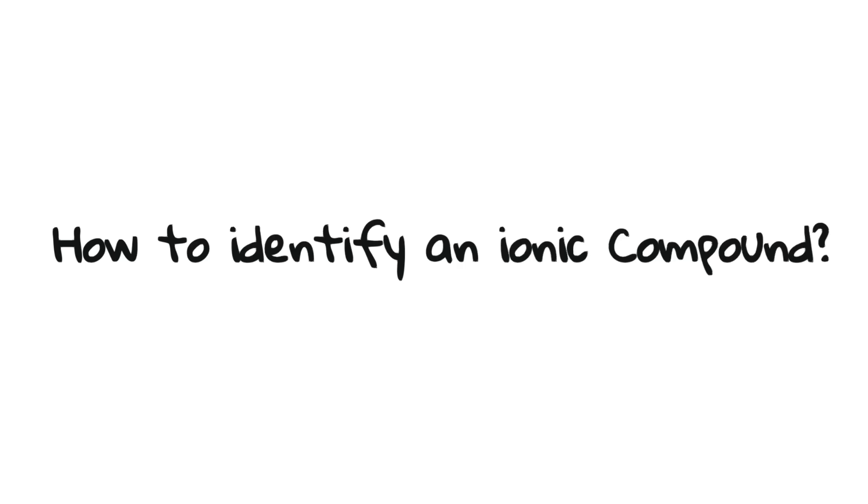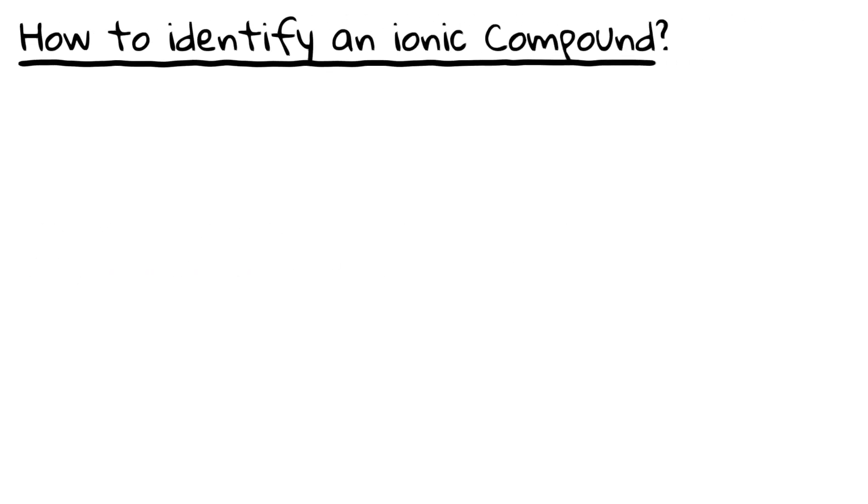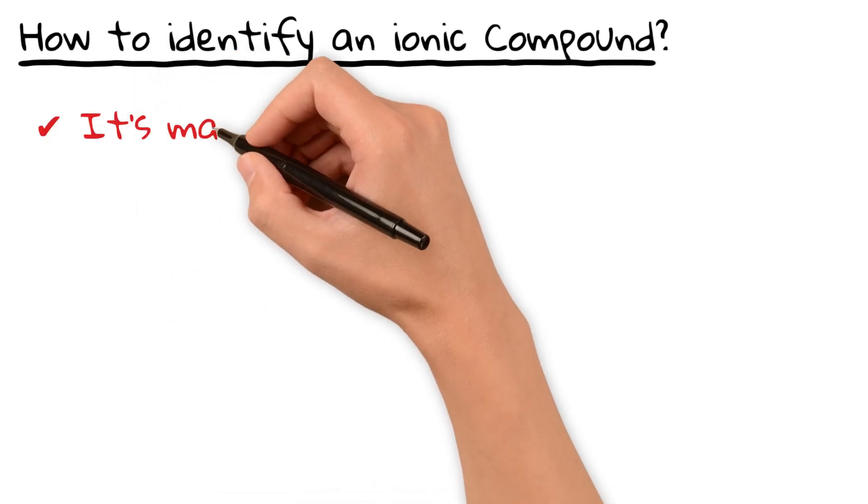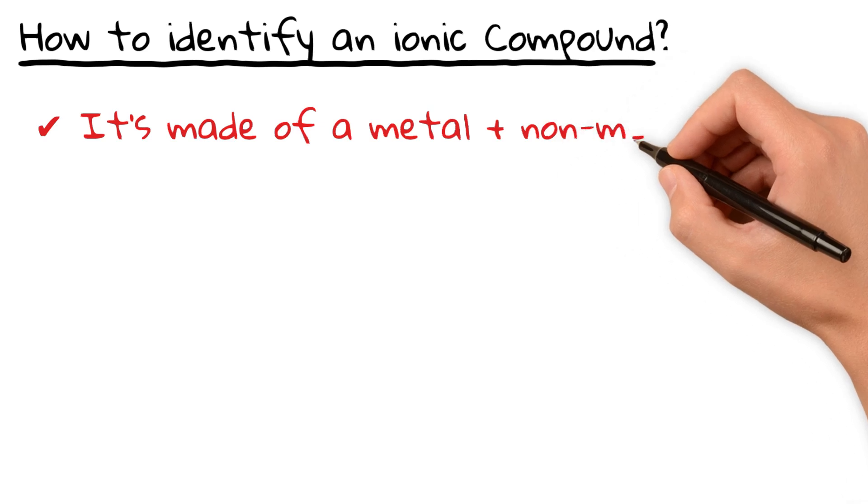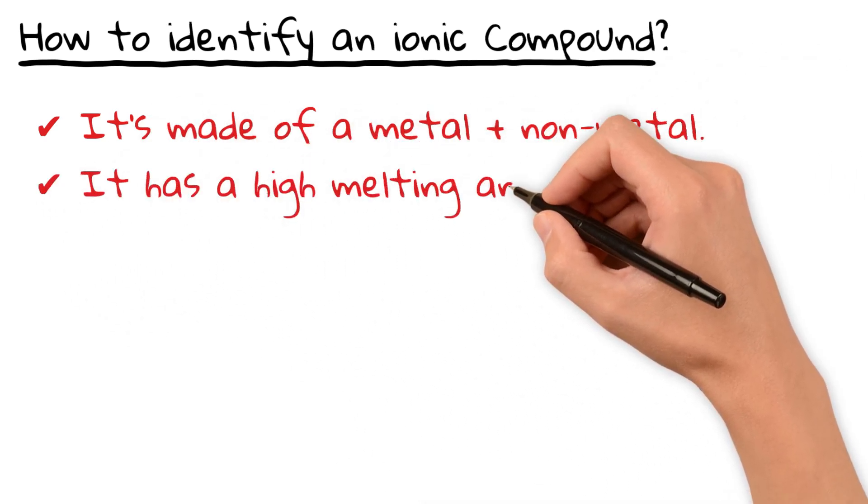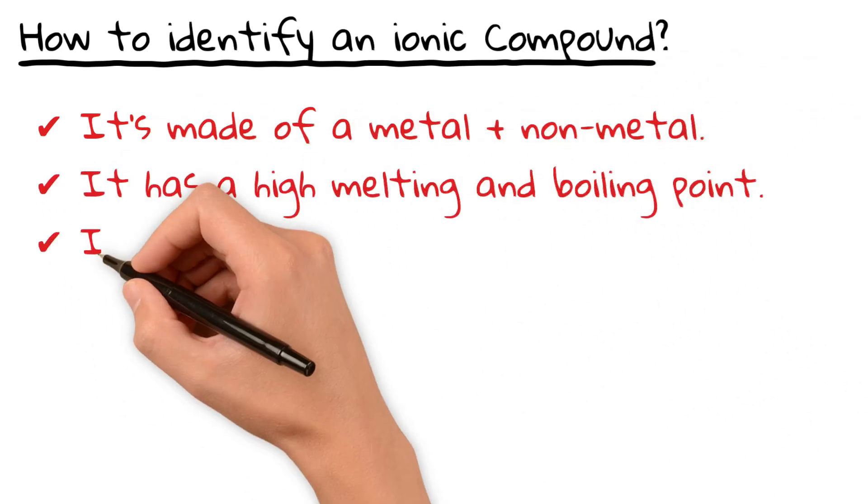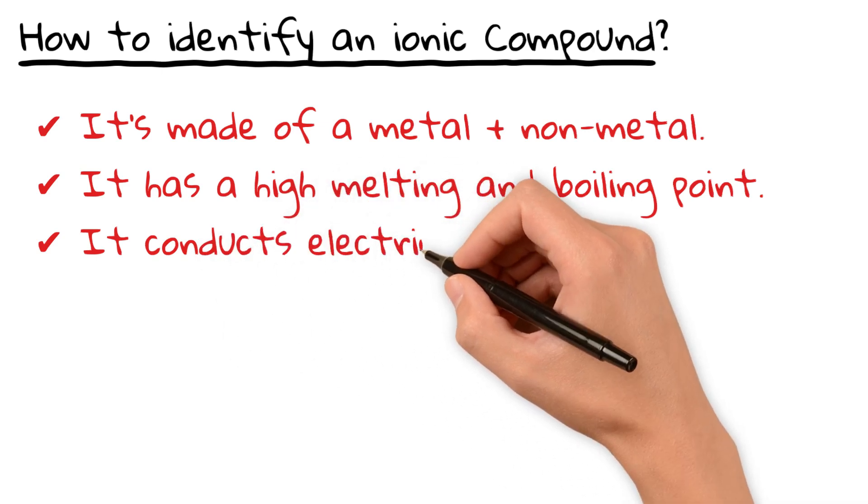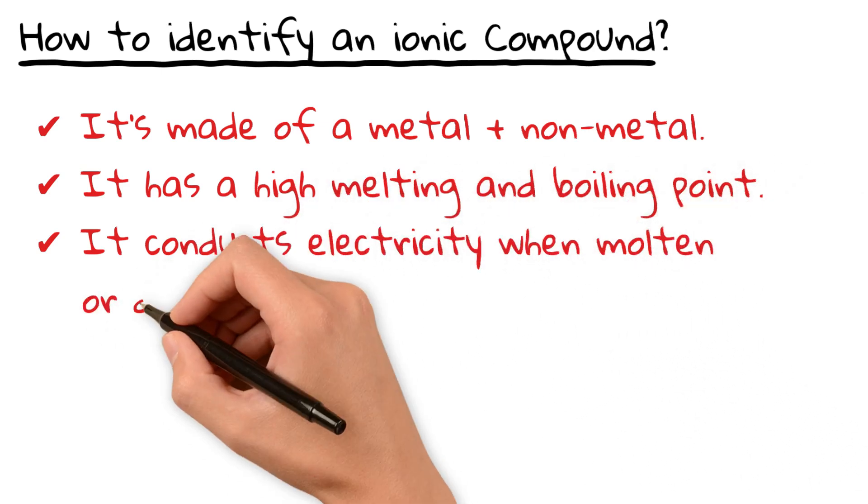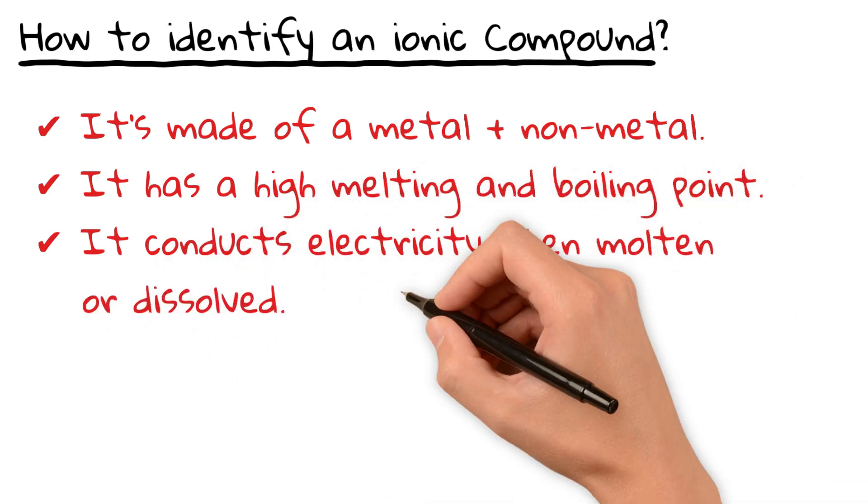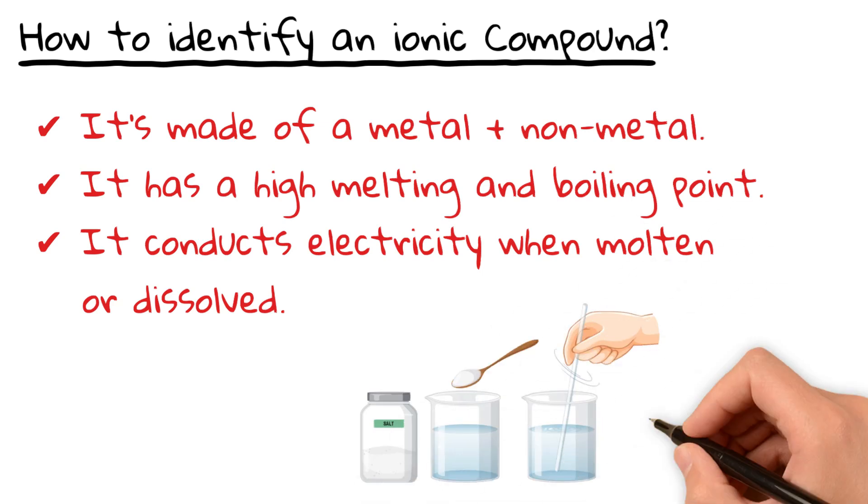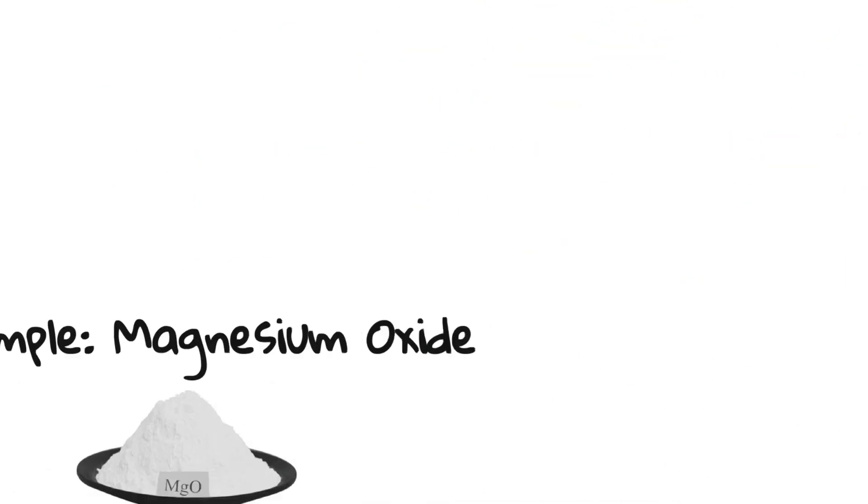So, how can you tell if a compound is ionic? Look for these signs. It's made of a metal and non-metal. It has a high melting and boiling point. It conducts electricity when molten or dissolved. For example, table salt dissolves in water and can conduct electricity. But what about magnesium oxide? Let's break it down.